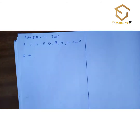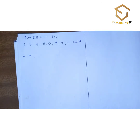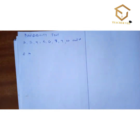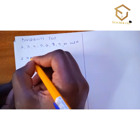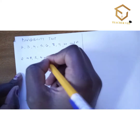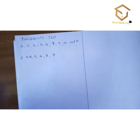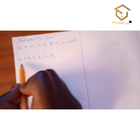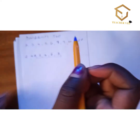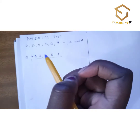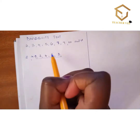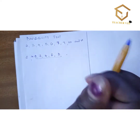For you to know that a number is divisible by 2: 2 is an even number and it divides even numbers. If the last digit of any number you have been given is 0, 2, 4, 6, or 8, that number is divisible by 2. That's all about the divisibility test of 2.